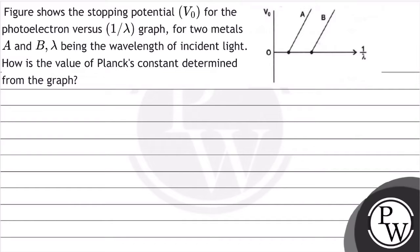Hello, let's read the question. The question says, figure shows the stopping potential V0 for the photoelectron versus 1 over lambda graph for two metals A and B, lambda being the wavelength of incident light. How is the value of Planck's constant determined from the graph?